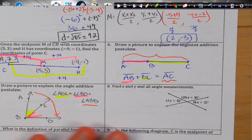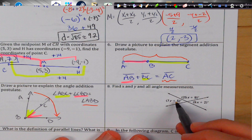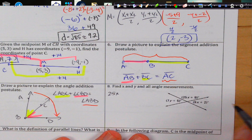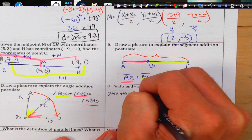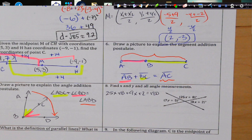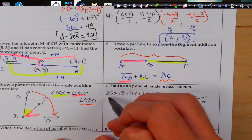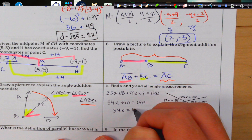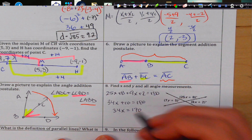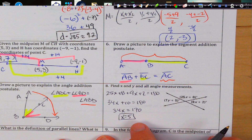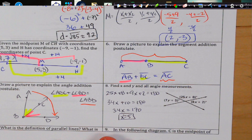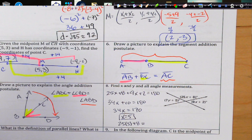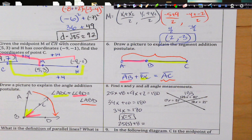Find X and Y in all angle measurements. We know these form a linear pair, so they add up to 180. We get 25x + 8 + 9x + 2 = 180. Combining like terms: 34x + 10 = 180, so 34x = 170, giving x = 5. Plugging back in: 25 times 5 plus 8 equals 133 for that angle measure.